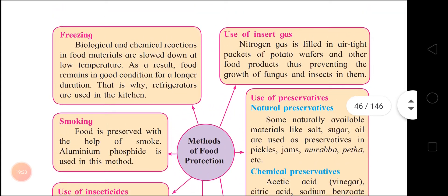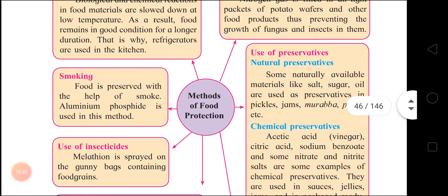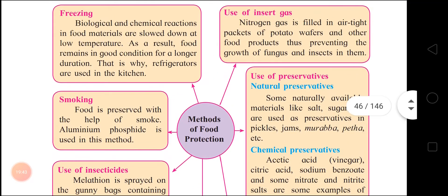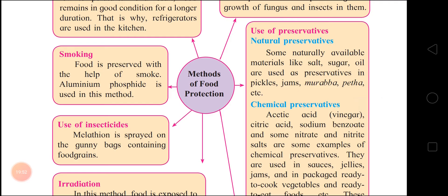Fifth: inert gas — nitrogen gas is filled in airtight packages of potato wafers and other food products to prevent the growth of fungus and insects. Sixth: use of preservatives — natural preservatives include salt, sugar, and oil, used in pickles, jams, muramba, and petha. Chemical preservatives are synthetic, such as acetic acid (vinegar), citric acid, sodium benzoate, nitrate and nitrite salts. These preservatives keep food safe for a very long duration.